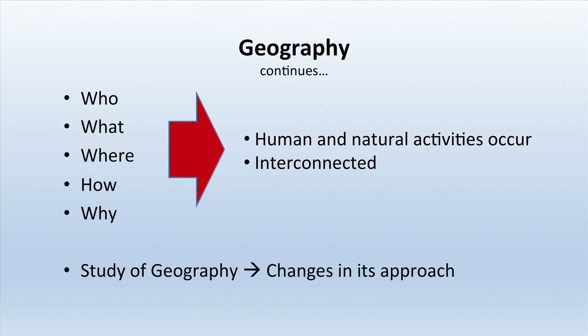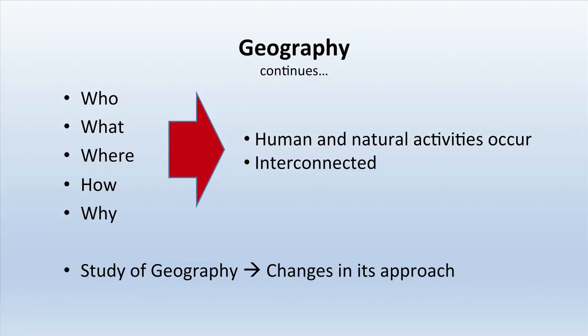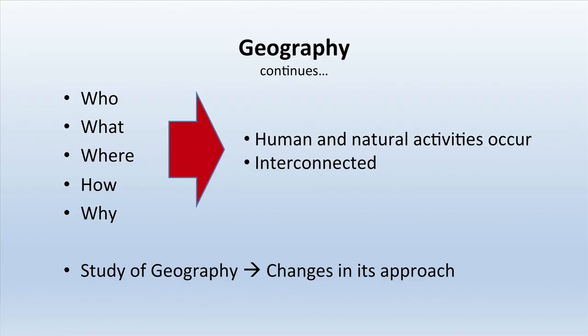So geography in totality means to describe about the earth surface. Geography is basically to know a few questions: who gets what, where, how, and why. The questions like who, what, where, how, and why are related to human and natural activities that occur on the earth surface and how they are interconnected with each other.